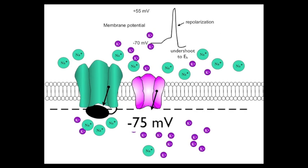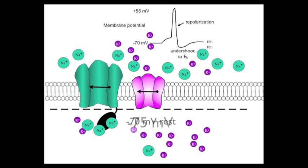Since the membrane is now repolarized, the channels reset, and the membrane potential then reverts back to its normal resting potential within several milliseconds. And you have this very brief spike in the membrane potential that then quickly repolarizes and reverts back to the normal resting potential. And that, ladies and gentlemen, is the action potential.